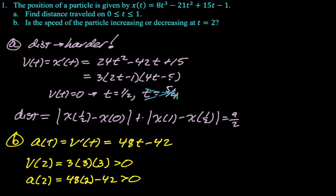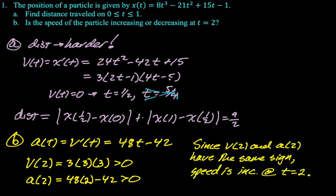Okay. So, we got greater than 0, greater than 0. V(2), A(2), both have the same sign. Therefore, speed is increasing at t equals 2. If they're both negative, we would also say speed is increasing. All right. Next problem.